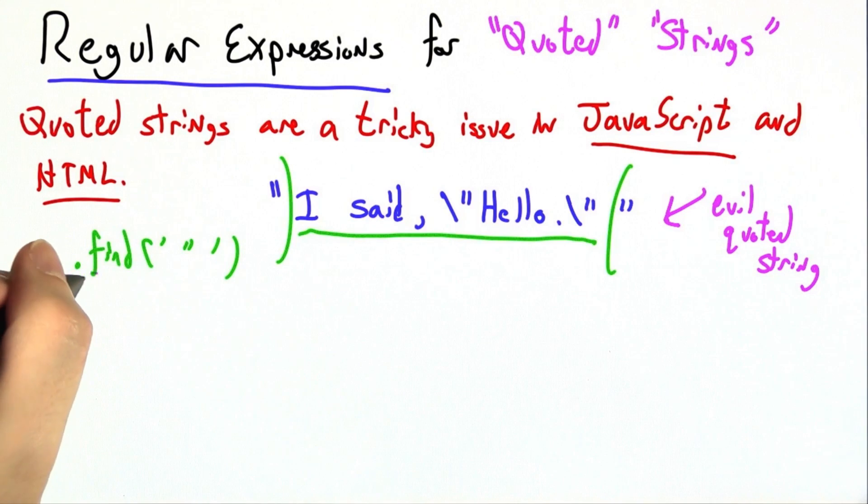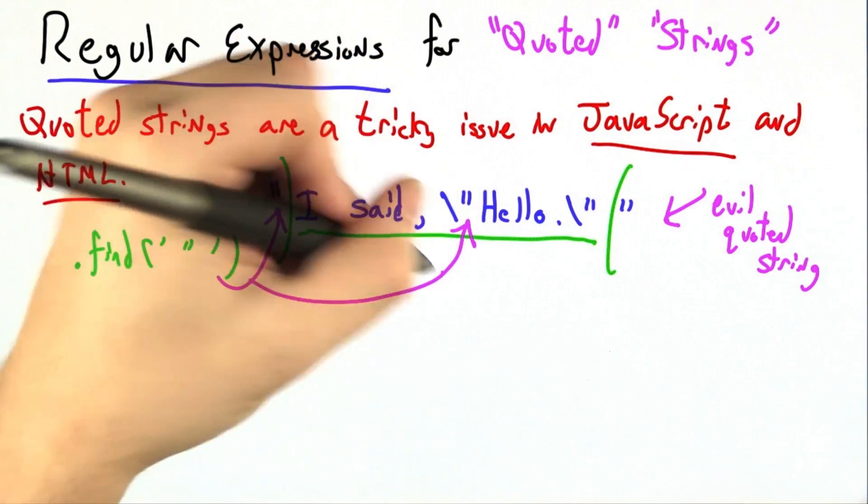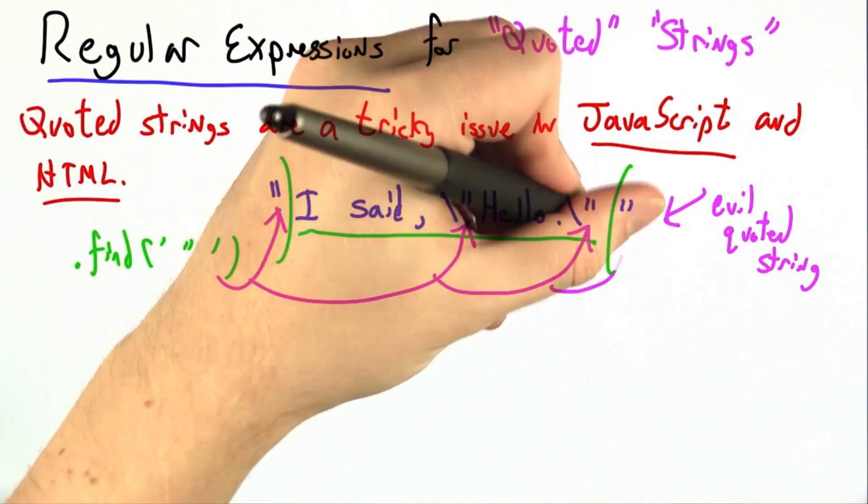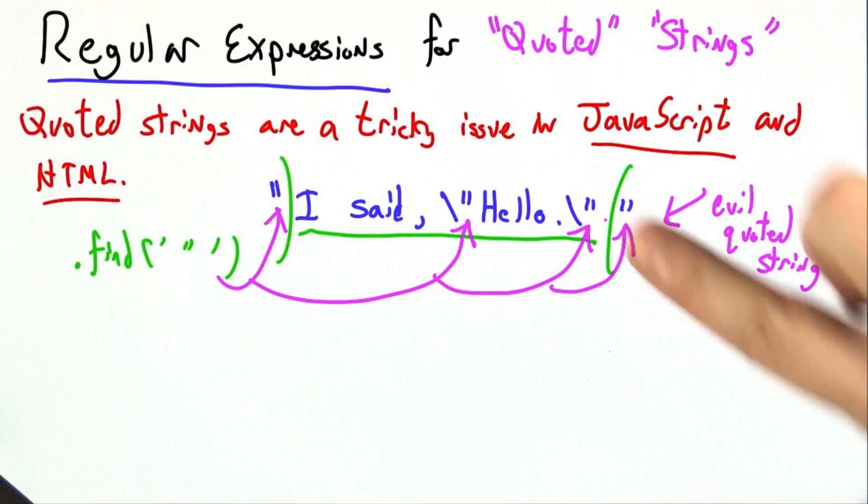However, if I just repeatedly use string.find to look for double quotes, I'll find this one, but also this one in the middle, this one in the middle, and this one in the end. So I might mistakenly think that it's two quoted strings, I said, and nothing over here.